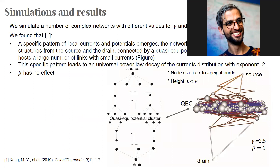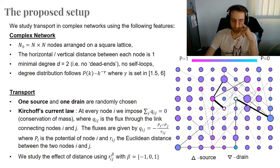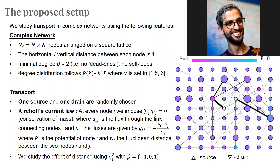The one-over-r case is motivated because in neural systems, connection probabilities decrease as one over r. The case proportional to r — where being further increases weight — was mostly a play with the model, but we can imagine some systems where it's true, like plane systems: you might have more transport between Dubai and Paris than between closer cities.